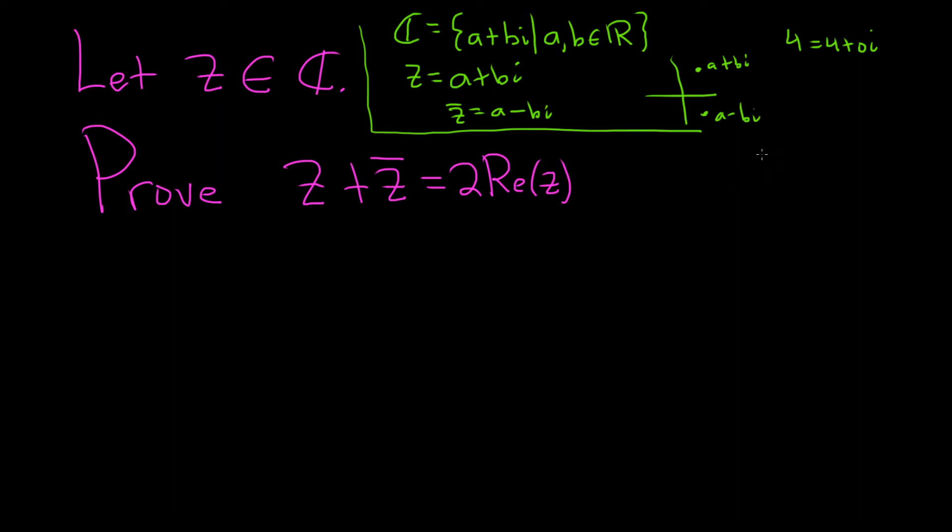And then the real part of z, what is that? So if you have z equals a plus bi, the real part of z is a. And just for extra life knowledge, the imaginary part of z would just be b. All right, let's go ahead and do our proof. I think we have enough background to actually just do the proof.